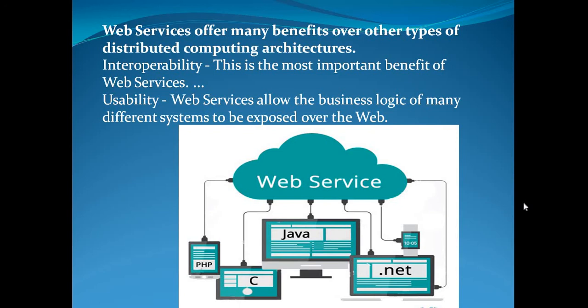We have multiple enterprise systems such as SAP, CRM, and ERP systems that we want to connect to. To connect to those systems, we need to handle different data formats. We convert the data into the desired format and connect to different systems — this is called interoperability, which is the most important benefit of web services. Different systems use their own data formats, and using web services we can access, consume, or provide data across all of them.